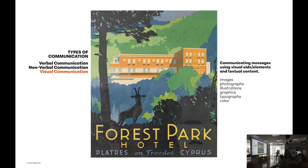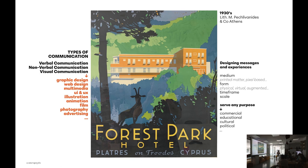Visual communication is communicating messages through visual aids, elements and textual content — meaning images, photographs, illustrations, graphics, typography and color. On the screen is a lithograph of a poster for the Forest Park Hotel at Platres from the 1930s. We see the elements: the hotel in the back, flat colors, a more modernist look on the coloring, and there is also the mouflon that makes it more local — it localizes the meaning by using a wild animal like the mouflon and the silhouette in the front, to communicate that this is happening in Cyprus.